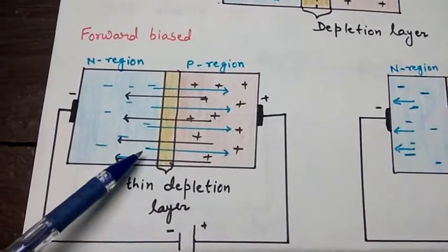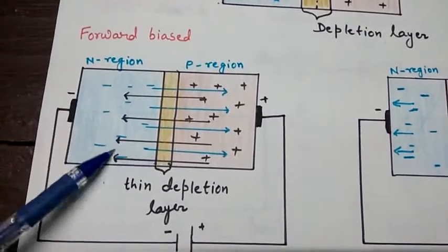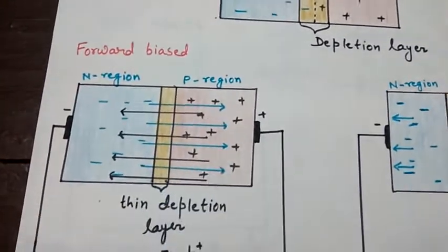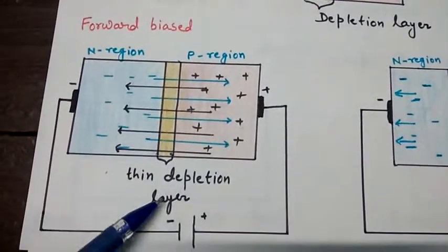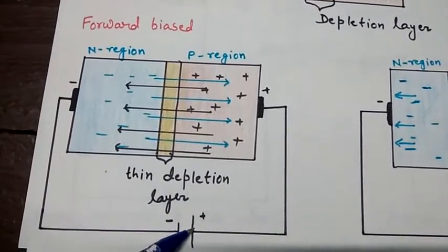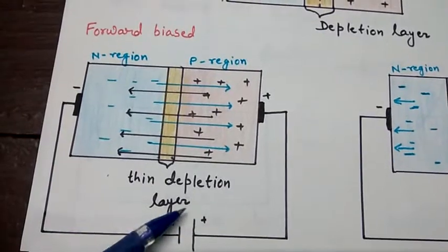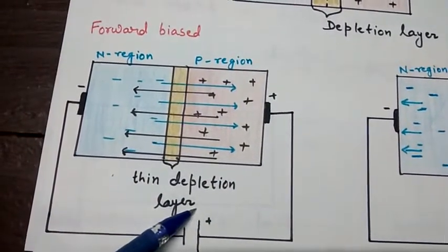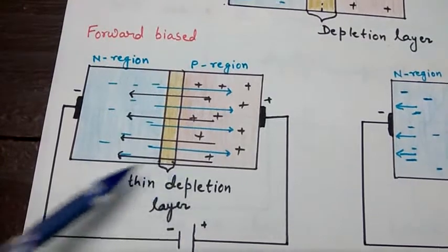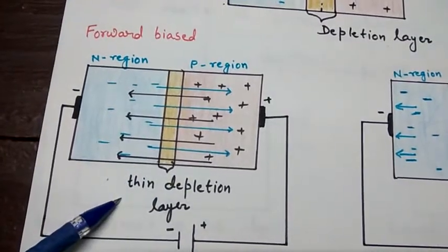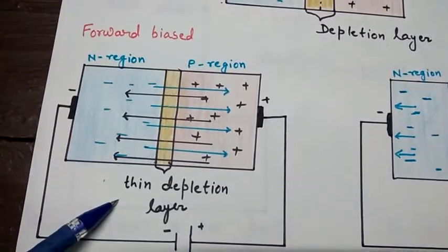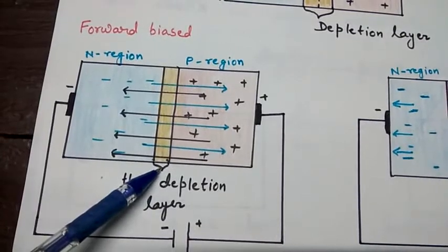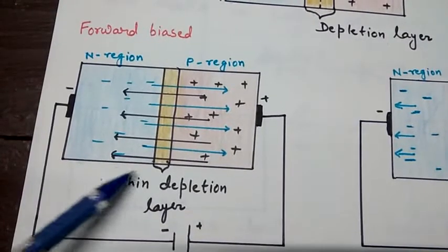Now I will talk about forward biased. As you can see, the positive of the diode is connected to the positive of the battery. Because of strong attractive force, electrons move towards the positive terminal and holes move towards the negative terminal. This causes a reduction in the depletion layer and allows the current to flow.